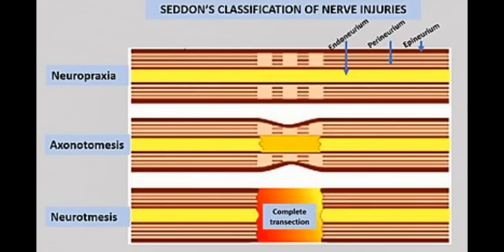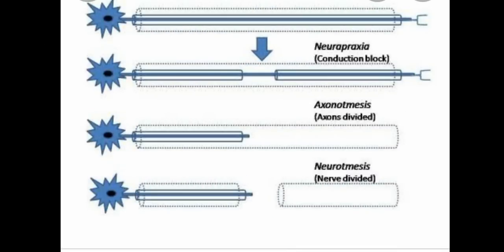In the next picture of neuropraxia, the yellow portion is going smoothly. In axonotmesis, there is some obstruction in the yellow portion within a grayish area. In neurotmesis, there is complete obstruction — the nerve is divided. I hope you all understand these diagrams.